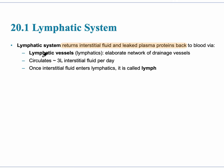Before it does this, the fluid enters into the lymphatics — the lymphatic vessels — and there are about three liters per day that are actually removed and enter into the lymphatic system. Once this interstitial fluid enters the lymphatic system, it is referred to as lymph.